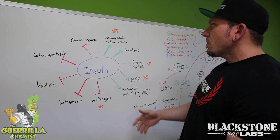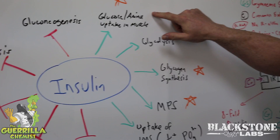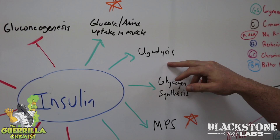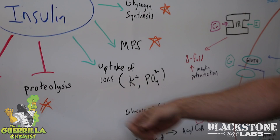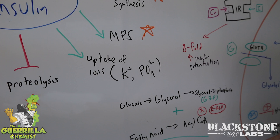So what does insulin do? On the positive side, insulin increases the storage of glucose and amino acids in muscle tissue. It increases glycolysis — the breaking down of carbohydrates for energy — it increases glycogen synthesis, it increases total muscle protein synthesis in the body, and it's responsible for the uptake of certain ions; potassium and phosphate are two of the big ones.